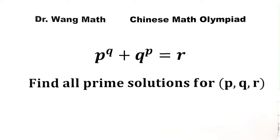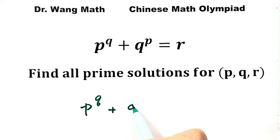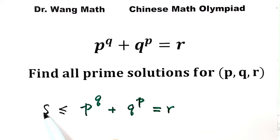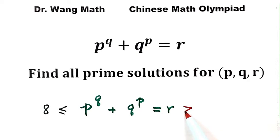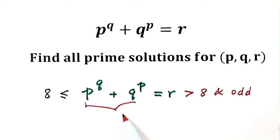Starting from the equation p^q + q^p = r: because the minimum value of a prime number is 2, the minimum value of each term is 2² = 4. So the left-hand side is greater than or equal to 8, which means r is also greater than or equal to 8. But since r is prime, it cannot be 8, so r must be greater than 8. Since the right-hand side r is odd (as a prime greater than 2 would be), the left-hand side must also be odd.